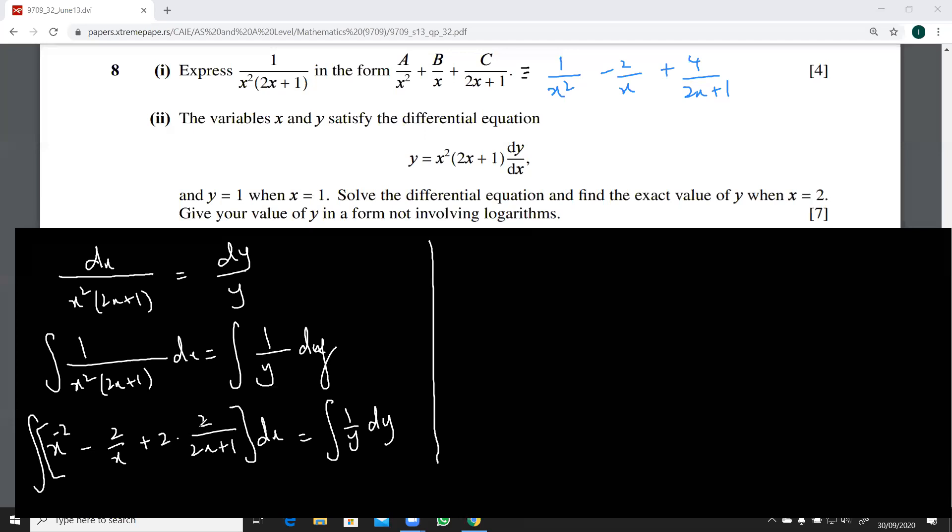I split it 4 here because I want 2 in the numerator, because 2x plus 1's derivative is 2. So now this is going to be minus 1 over x, the integral of x to the power minus 2, minus 2 ln x, plus 2 ln 2x plus 1.